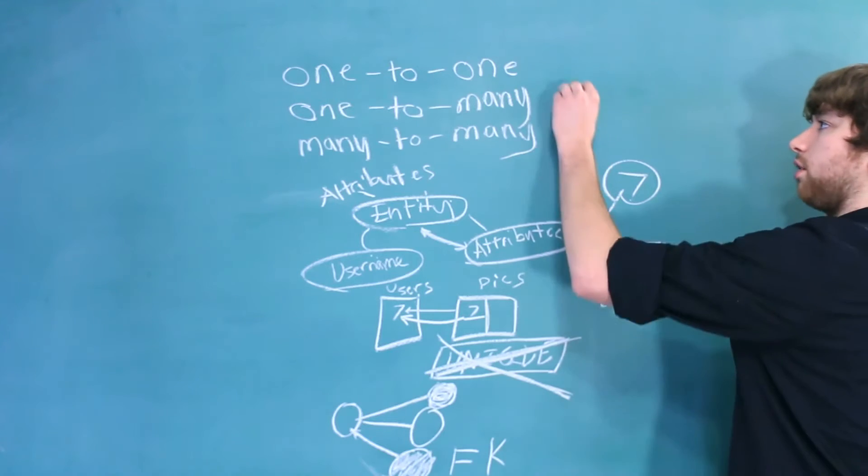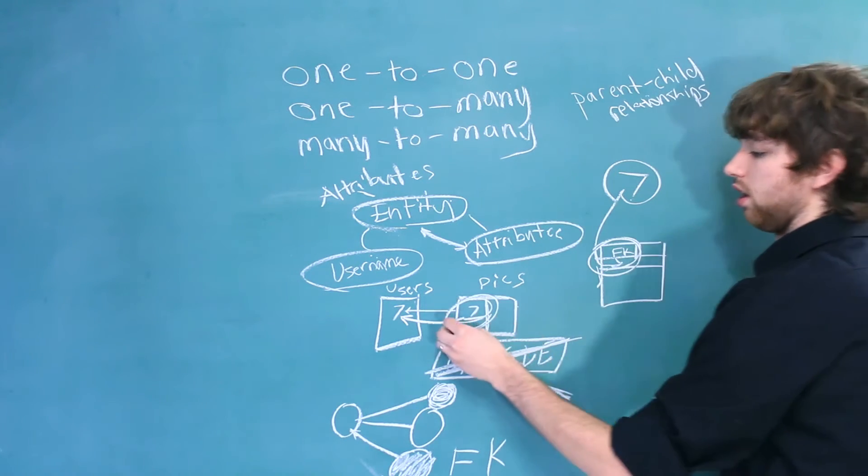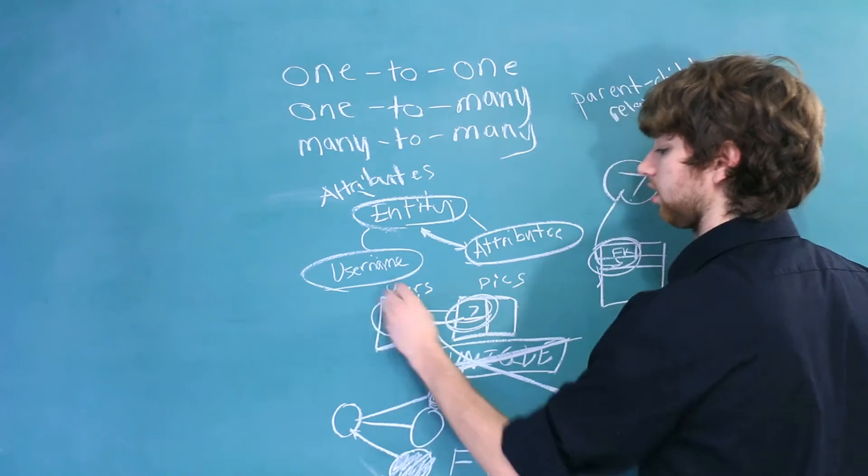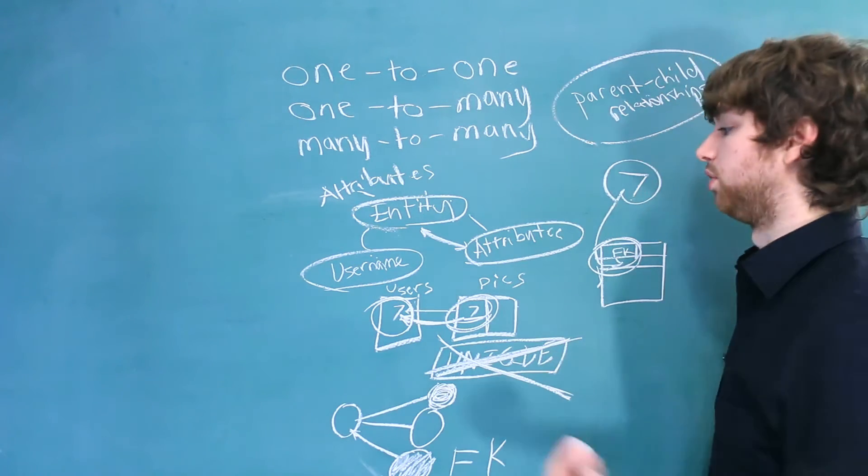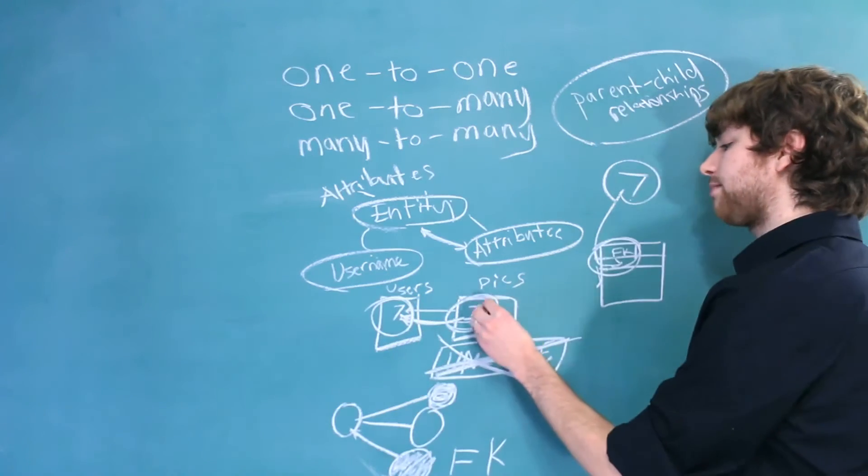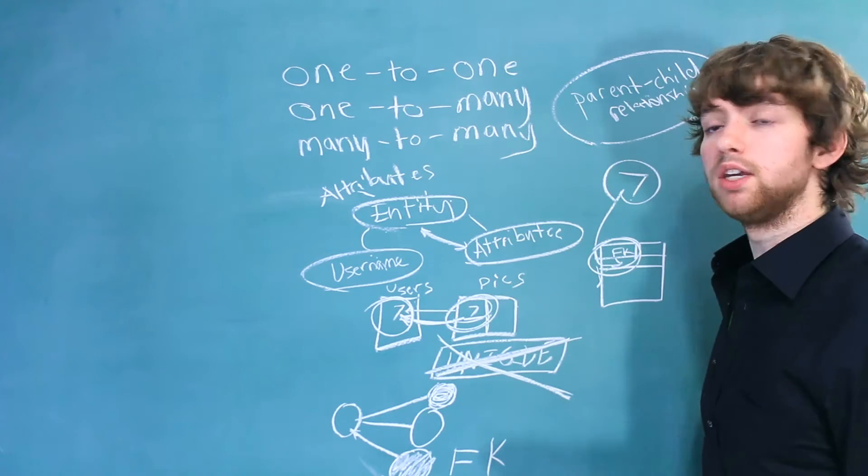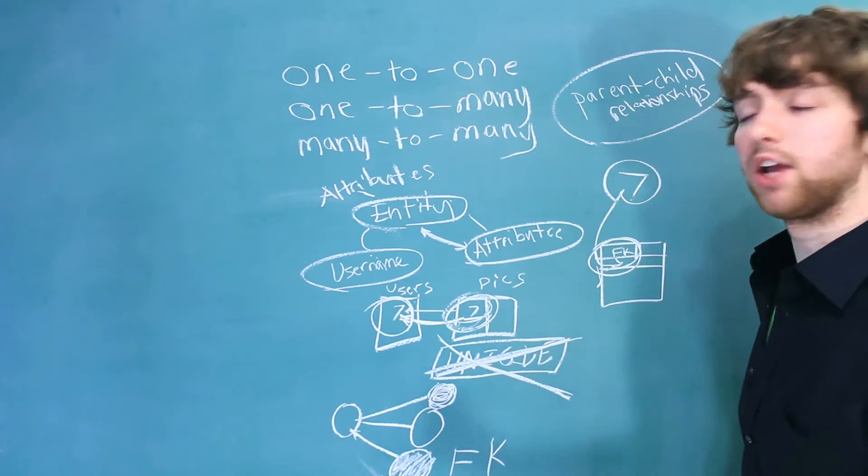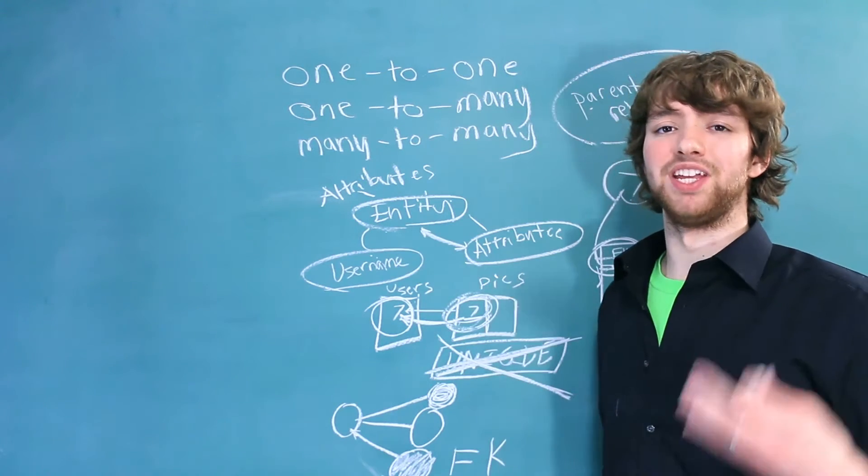We haven't discussed a whole lot on parent-child relationships, but essentially when you have a foreign key referencing a primary key, that's what's known as a parent-child relationship. The primary key would be the parent. So anytime you have a foreign key referencing another column, even if it's not a primary key, that foreign key is the child of a parent-child relationship. And the column it references would be the parent column.